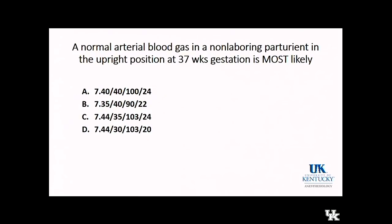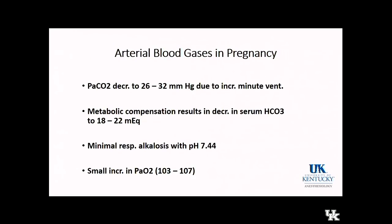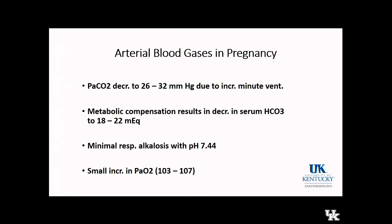What do you expect to be a normal blood gas in a pregnant woman? You are going to see some changes. You will see a decrease in CO2, with normal CO2 somewhere between 26 to 32, due to the significant rise in minute ventilation. However, patients don't become markedly alkalotic because there's a metabolic compensation resulting in a decrease in serum bicarb. You will see a minimal respiratory alkalosis around pH 7.44.